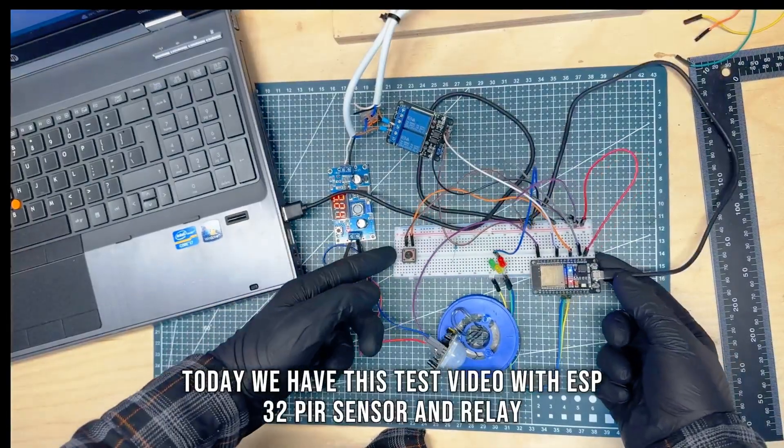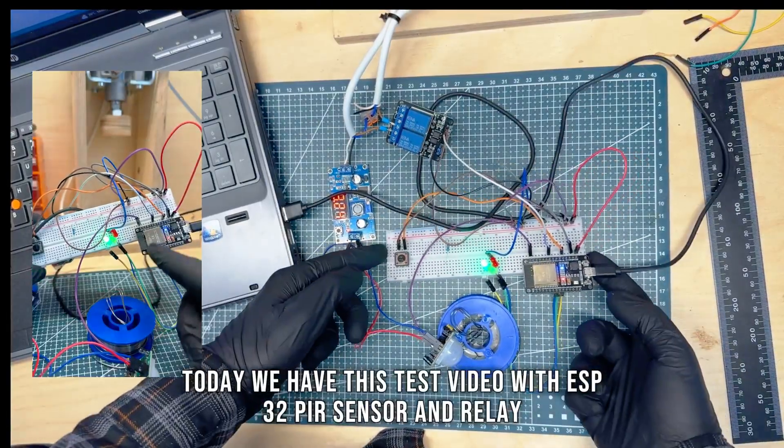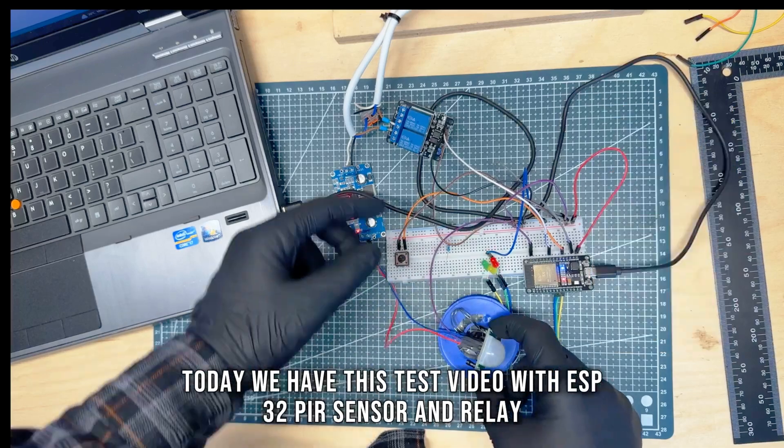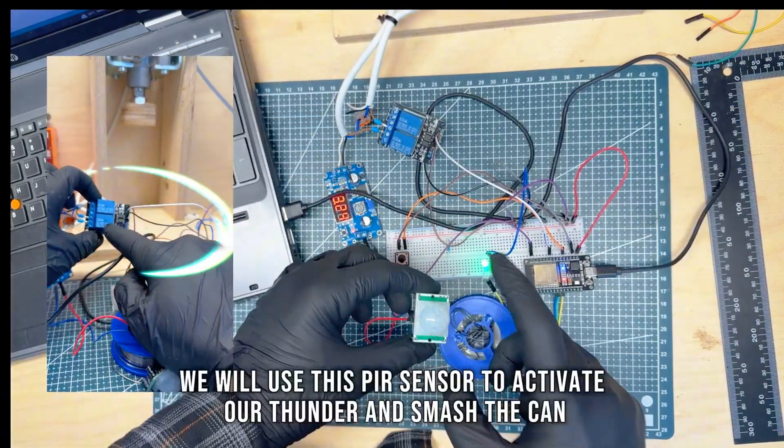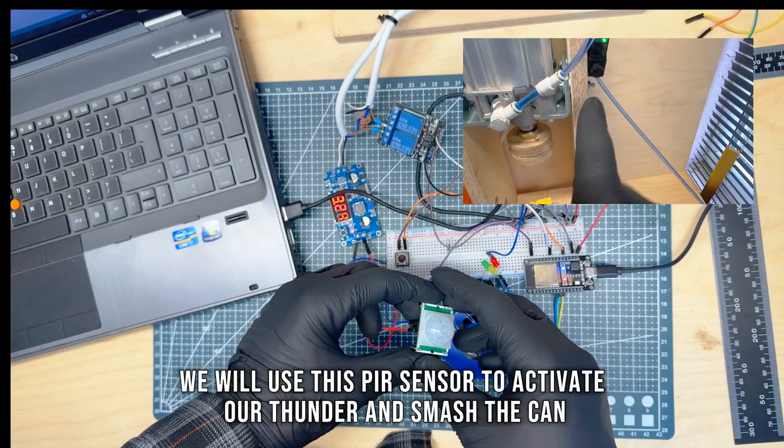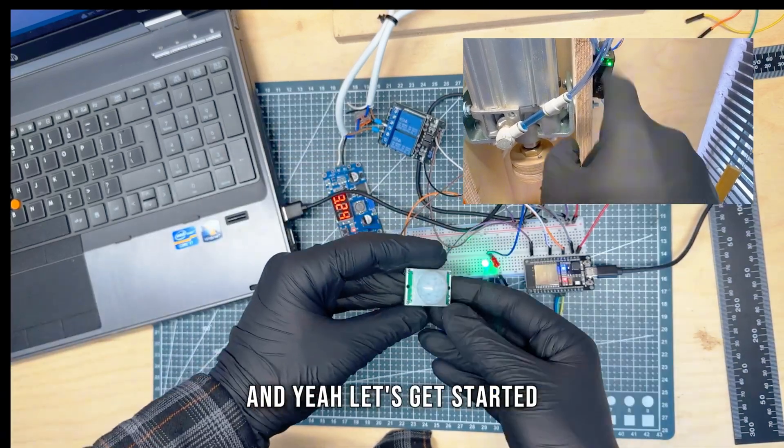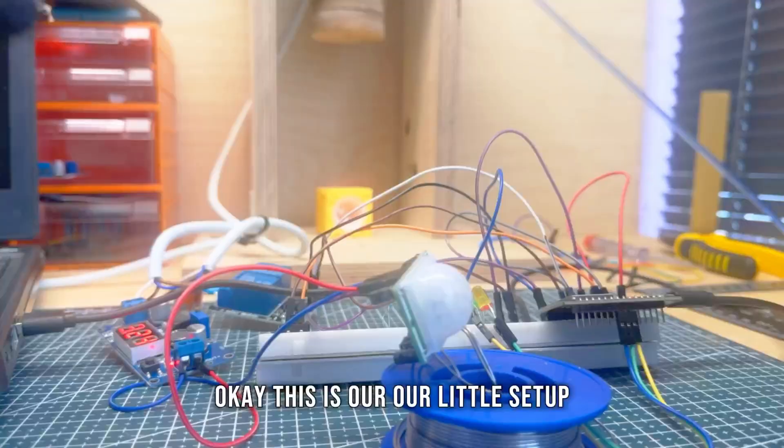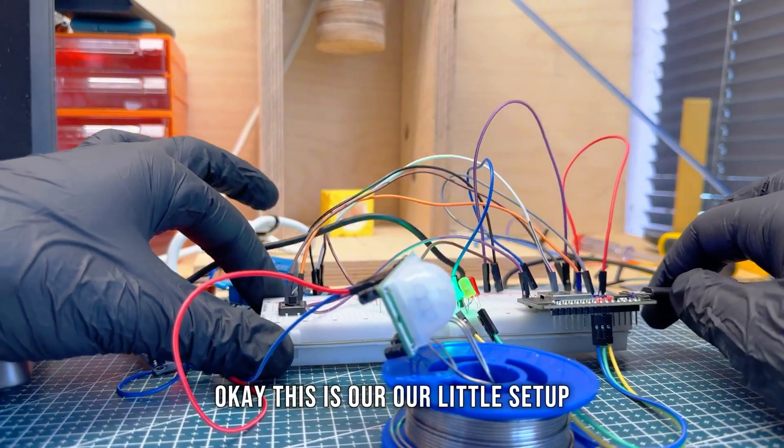Welcome back. Today we have this test video with ESP32, PIR sensor, and relay. We will use this PIR sensor to activate our cylinder and smash the can. And yeah, let's get started. Okay, this is our little setup.